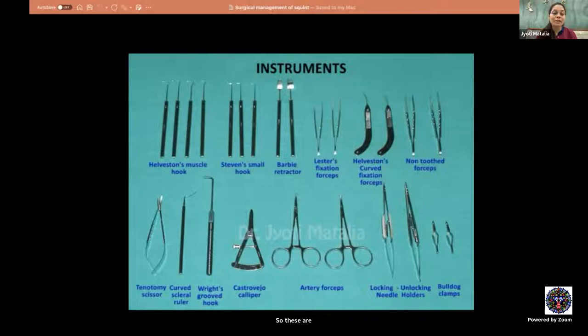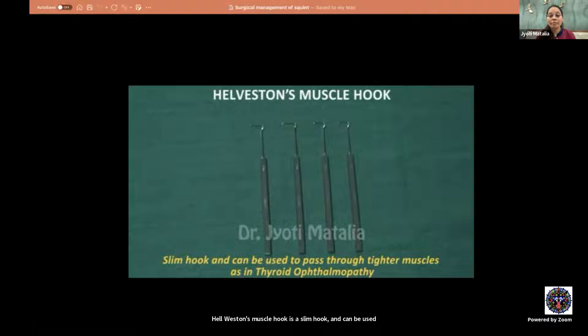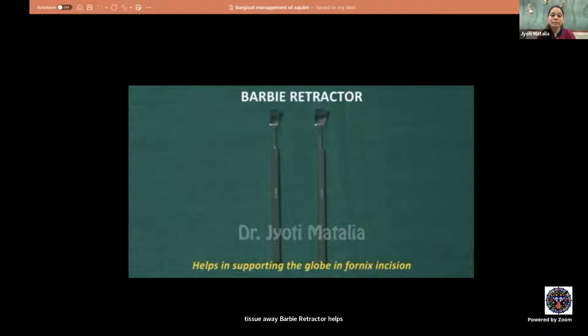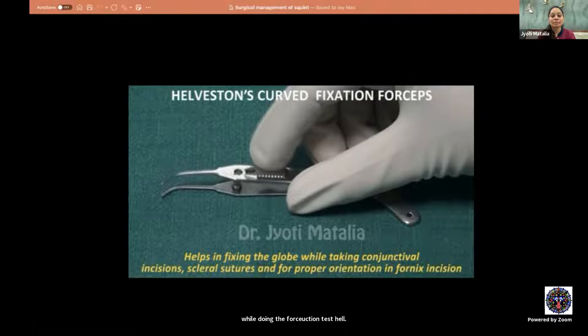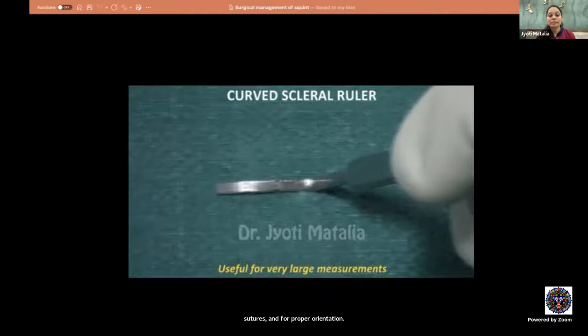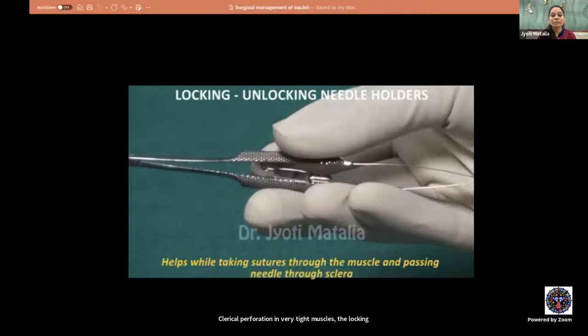Helveston's muscle hook is slim and useful for tight muscles as in thyroid ophthalmopathy. Stephen's small hook retracts tissue. Barbie retractor supports the globe in fornix incisions. Lester's fixation forceps fixes the globe during force duction testing. Helveston's curved fixation forceps helps with conjunctival incisions, scleral sutures, and orientation in fornix incisions. The curved ruler is useful for very large measurements. The grooved hook avoids inadvertent scleral perforation in tight muscles, and locking/unlocking needle holders allow suturing through muscle and sclera with ease.